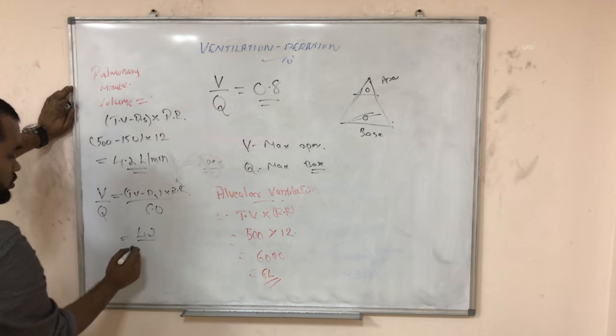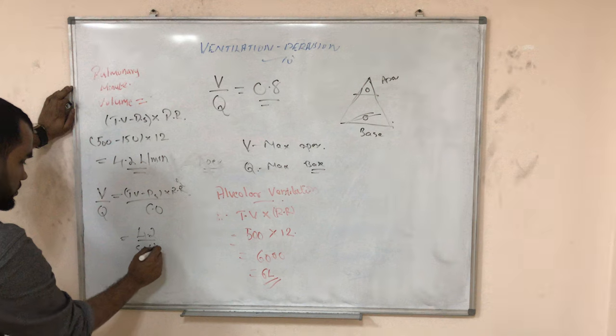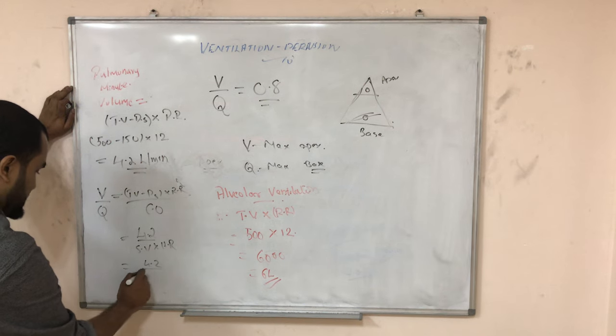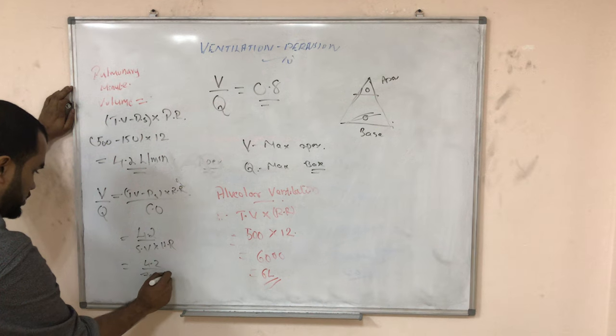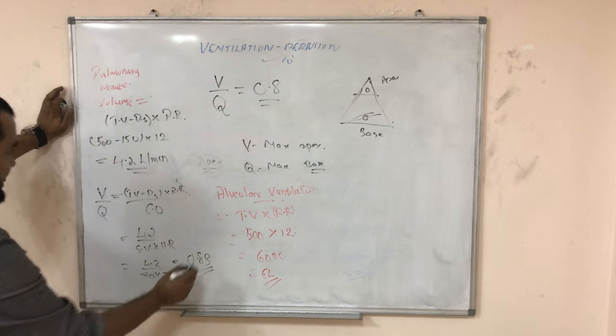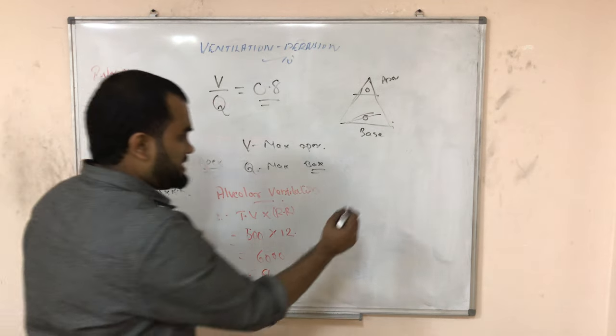Cardiac output is equal to stroke volume into heart rate. 70 is the stroke volume, heart rate is around 72. So you get 0.83. This is how you get 0.83.